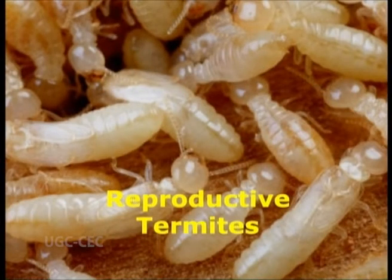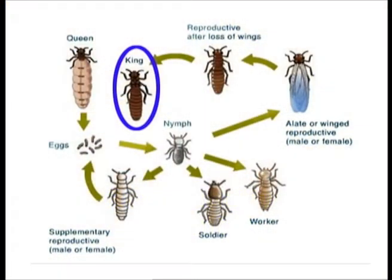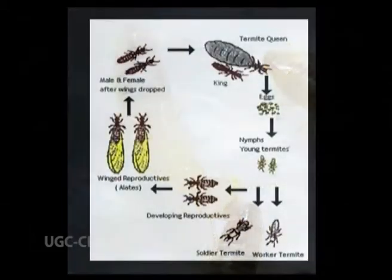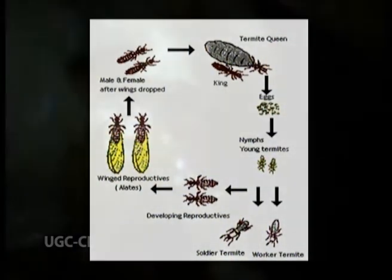The reproductive caste always includes a king and a queen, who are the parents of the termite family and founders of the colony. Some species also have a few supplemental reproductives who share the egg-laying duties. These are the only adult insects in the colony. The queen lays large numbers of eggs which develop into more workers and soldiers as the family grows.